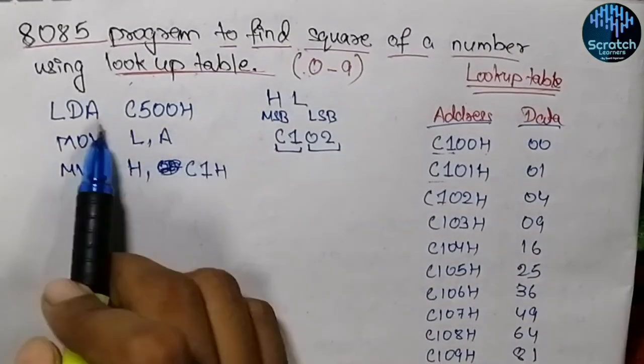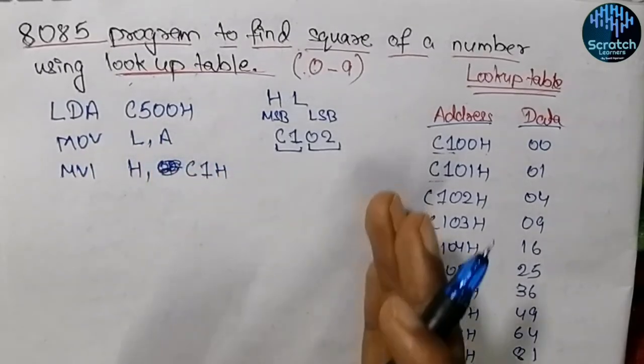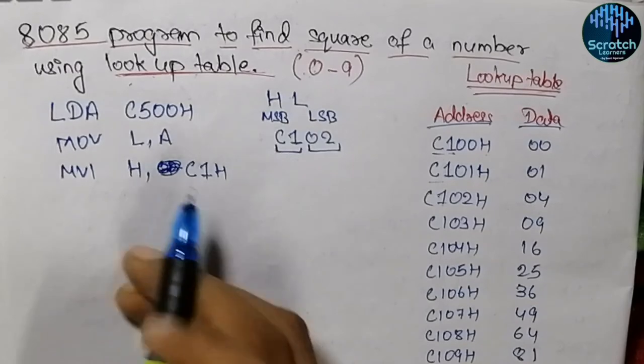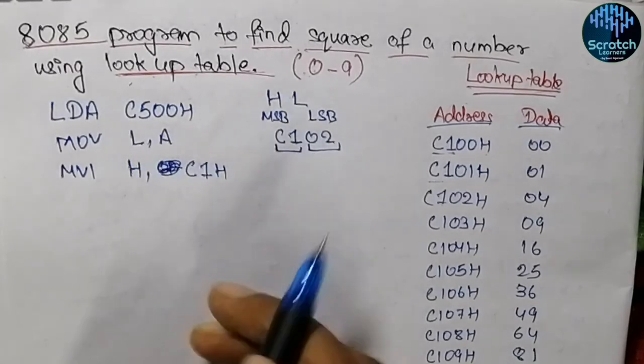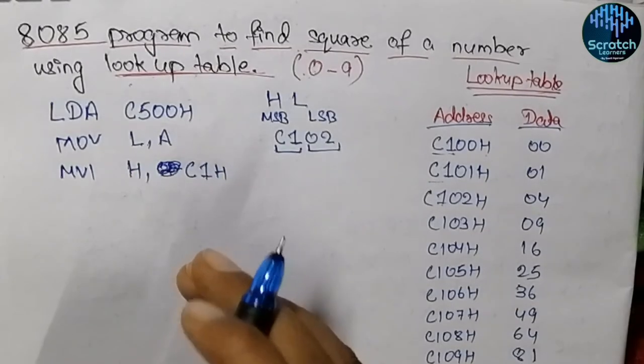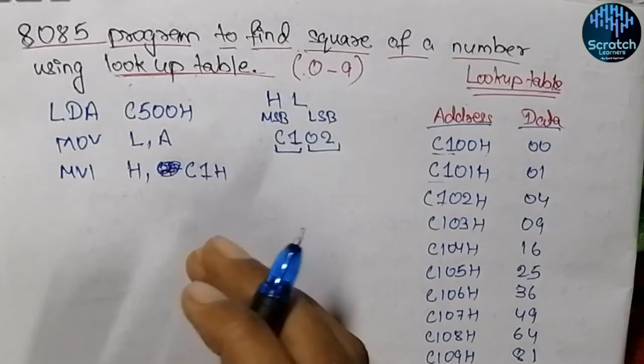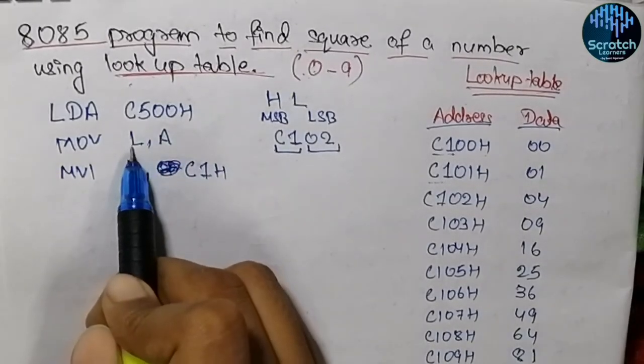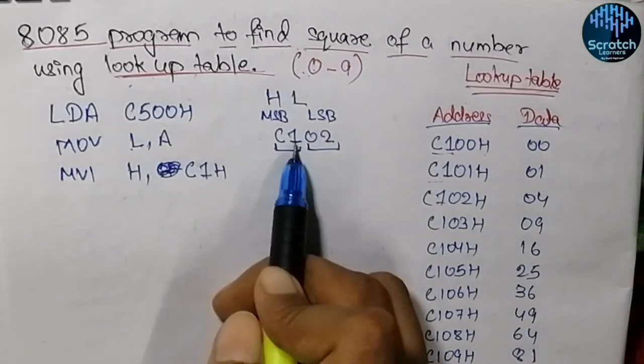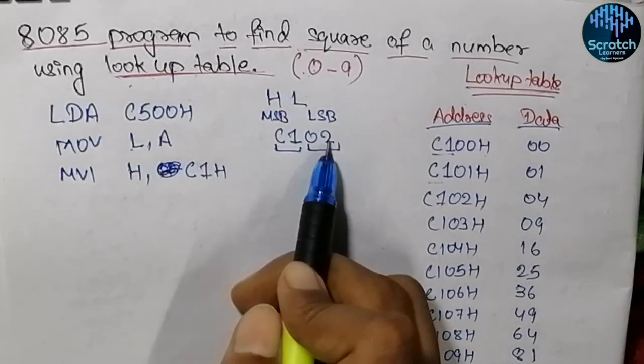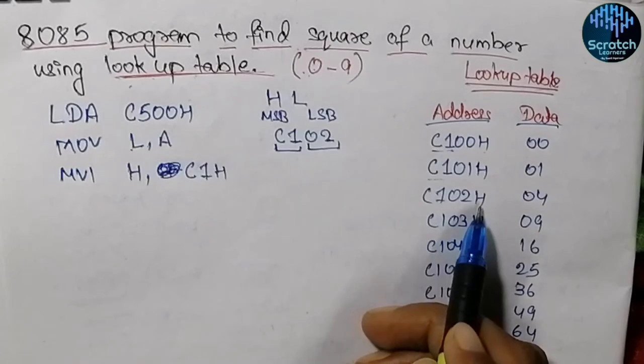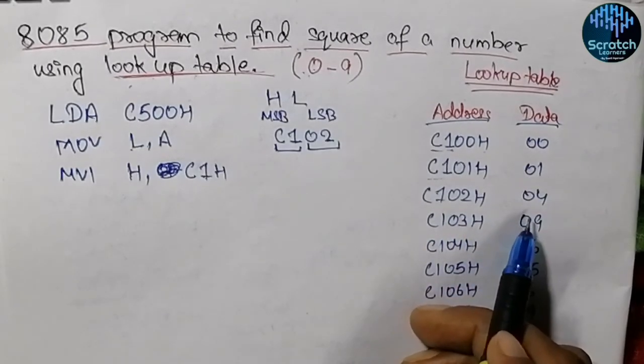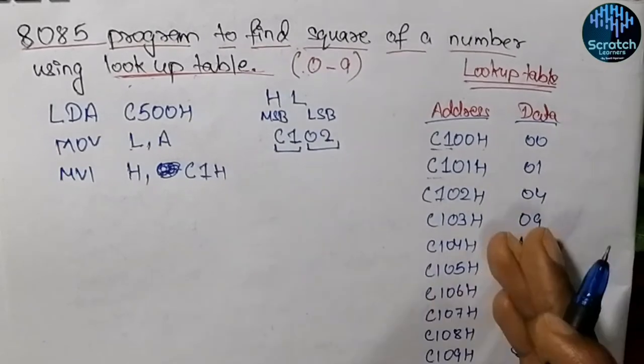The input data, for which we want the squared value, will be stored in the L register. If we want to find the square of 2, we move 2 into L register. So H is C1 and L is 02. We go to address C102H and fetch the squared value, which is 04. This is how we get the answer.